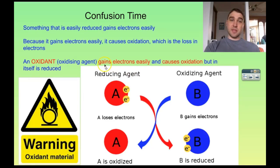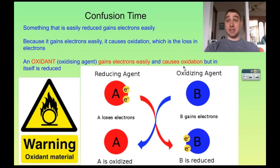So an oxidant gains electrons easily and causes oxidation, but it itself is reduced. In other words, a substance that causes oxidation is easily reduced.